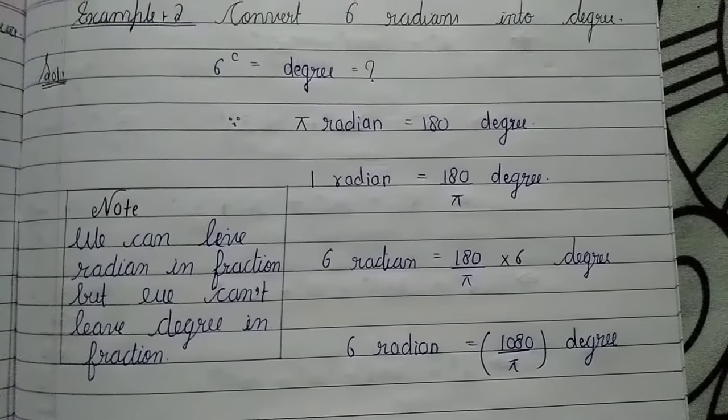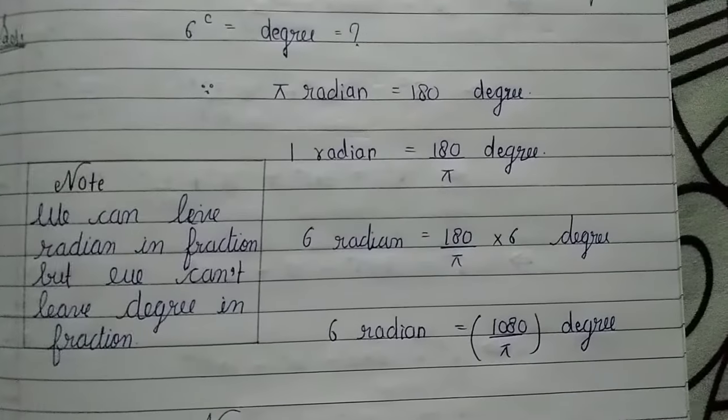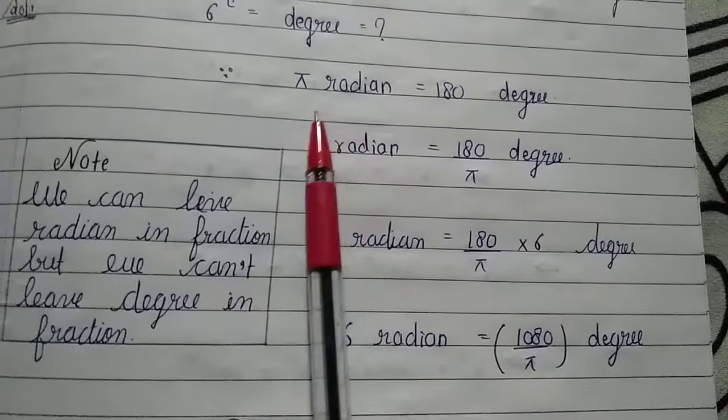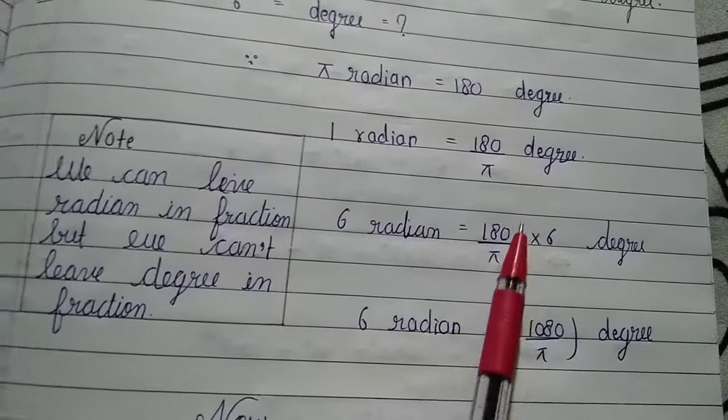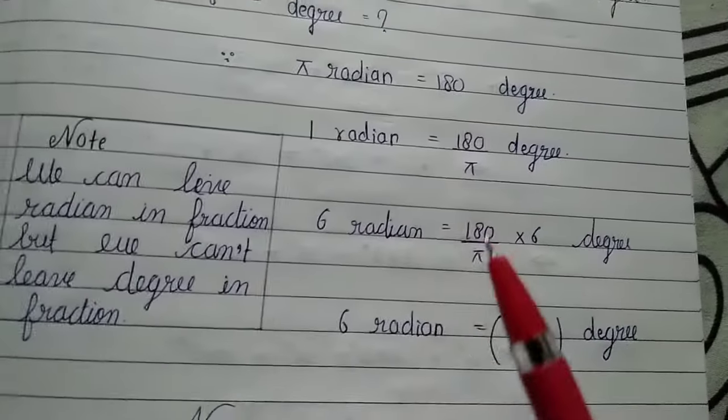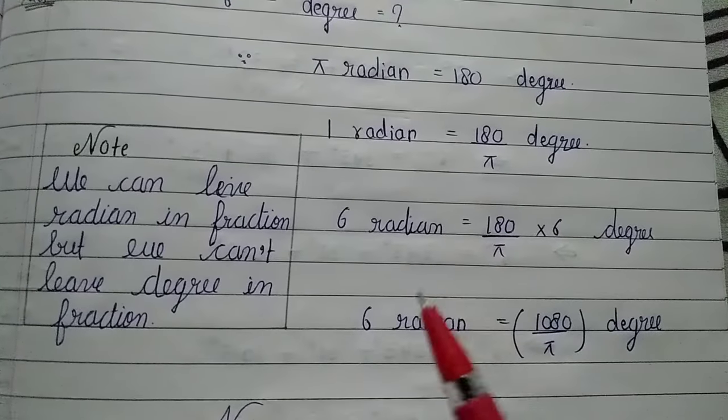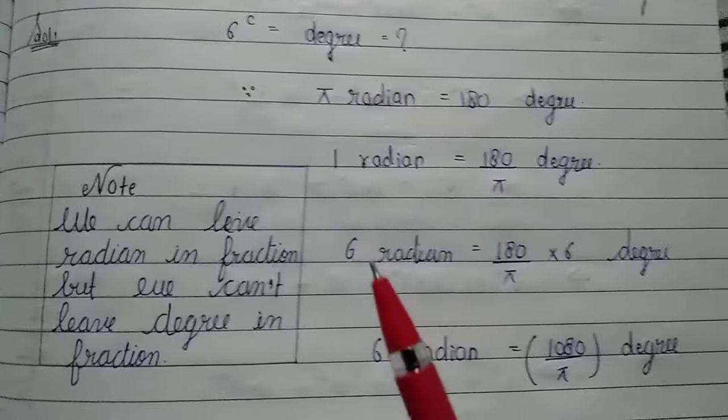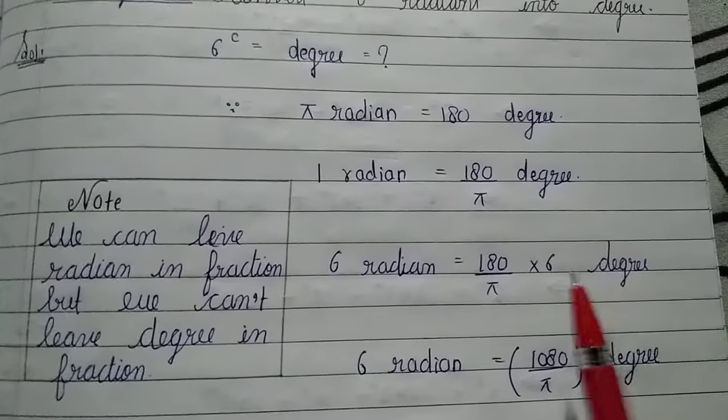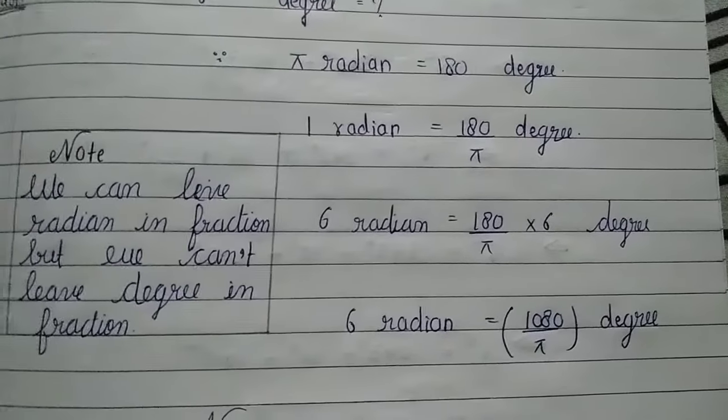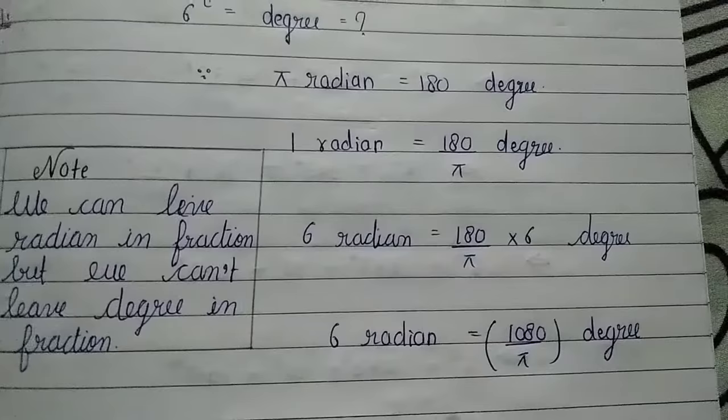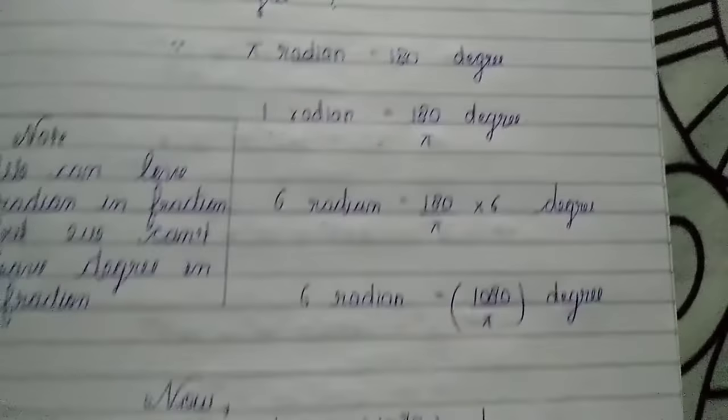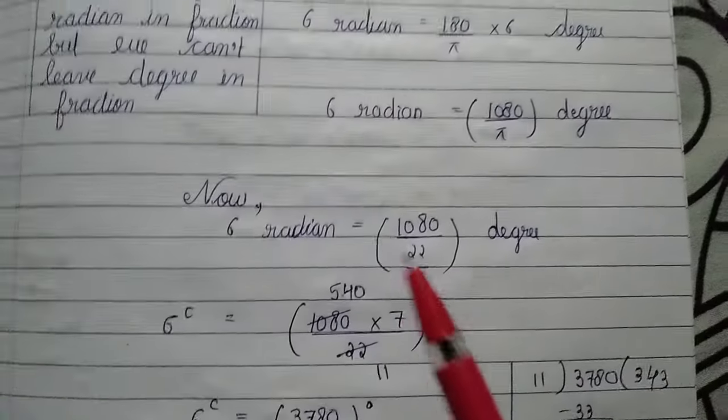Let's see, 1 radian is equal to 180 upon π degree. So now we have to convert 6 radians into degree. 6 radians is equal to 180 upon π into 6 degree, so 6 radians is equal to 1080 upon π degree.